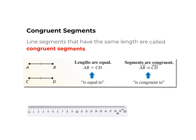We use AB represents the length of line segment AB. So these two segments have the same length. The equal sign, 5 centimeter equal to 5 centimeter. Based on the definition here, these two line segments are congruent to each other.